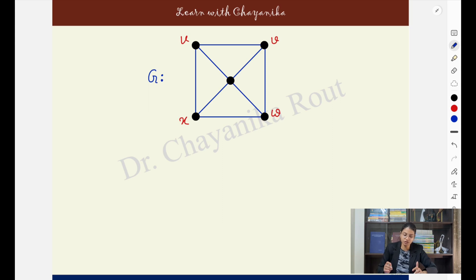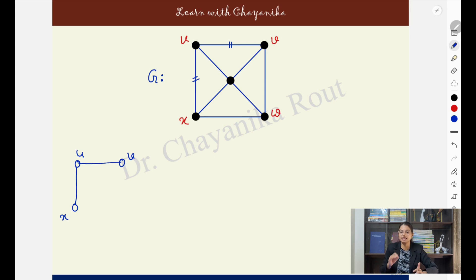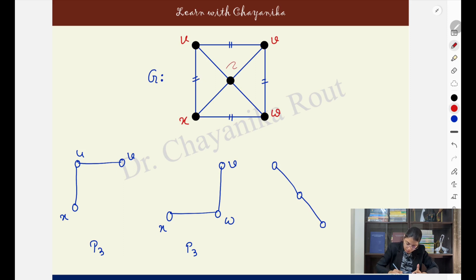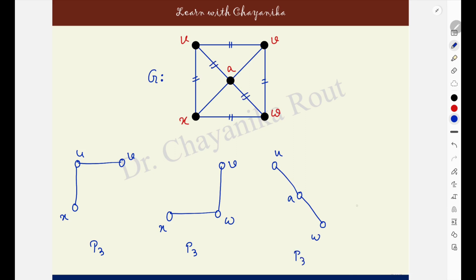Suppose this is graph G and I ask you to decompose it into copies of P3. I can take V, U, X — this is a P3, so those two edges are taken. Next I take V, W, X — those two edges are taken in another P3. There are some edges left, so I take U, A, W — also a P3 — and finally V, A, X, where those two edges are also taken and this is also a P3. I have broken down the graph into only P3 copies and every edge is taken exactly once in exactly one copy.